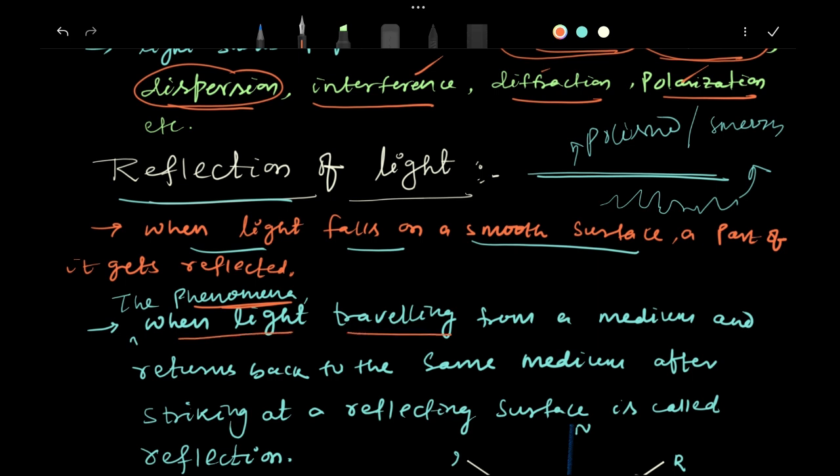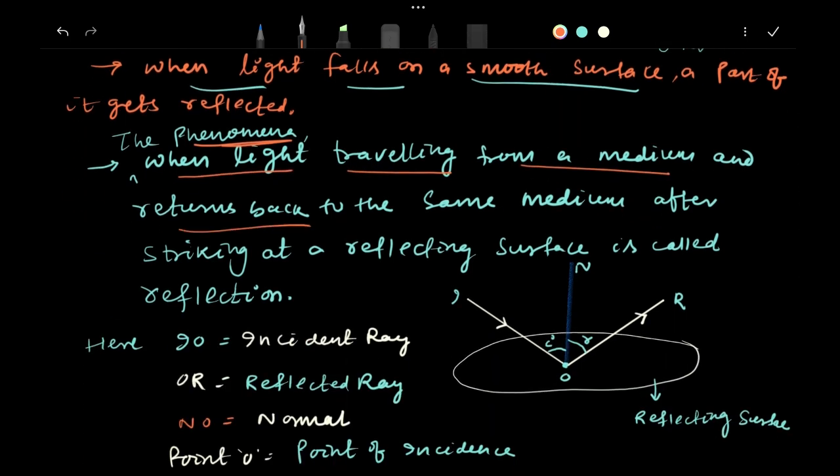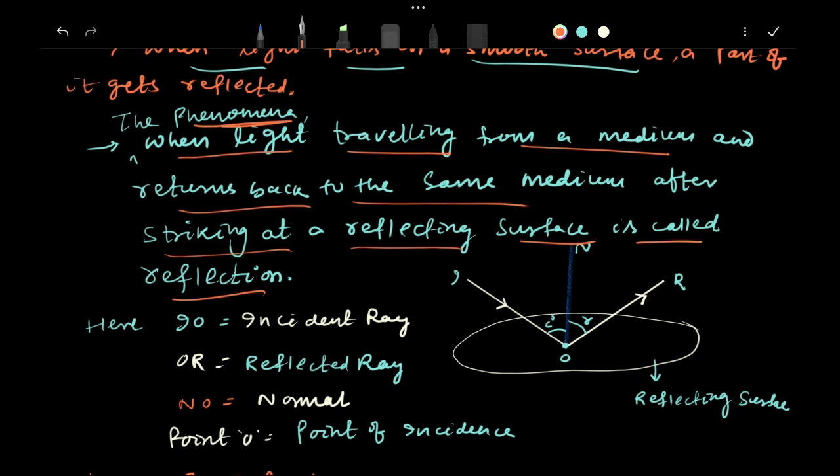The phenomenon when light traveling from a medium returns back to the same medium after striking at a reflecting surface is called reflection. If you will analyze the definition, let us say this one is a reflecting surface. This is the incident ray. Light traveling from a medium, let us say this is air. Light is now coming along the path IO. After hitting at point O, it is again going back in the path OR, and here it is also air. So the light is coming from air, striking at a point which is on the reflecting surface.